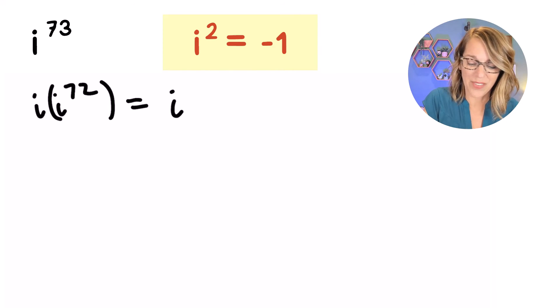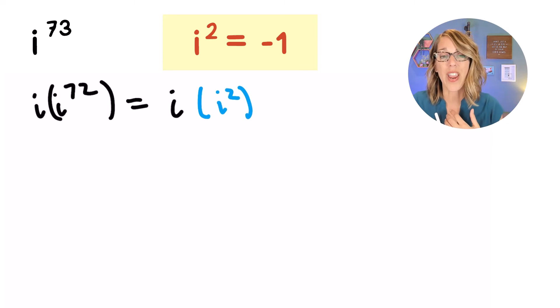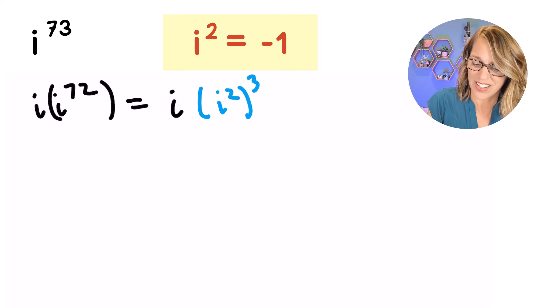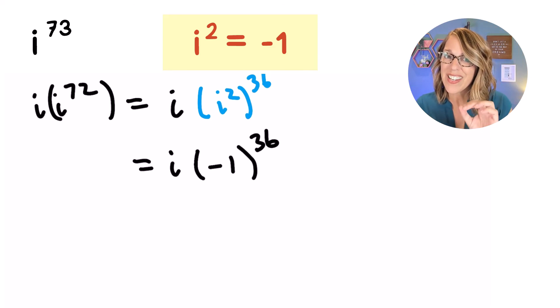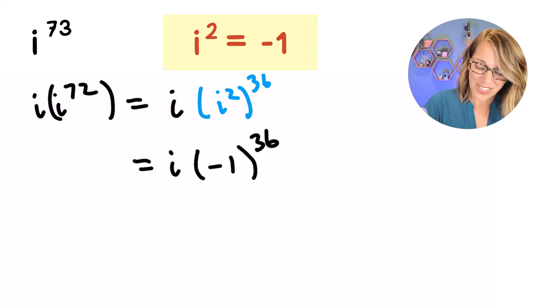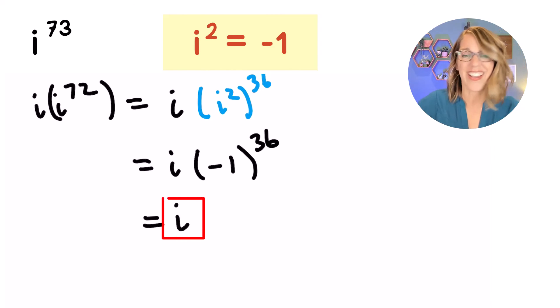I'm going to leave that i out in front and rewrite i to the 72nd as a power of i squared. Now 72 divided by 2 is 36, so I get a 36 on the outside here, and that's going to leave me with an i. I'm going to replace i squared with negative 1, and I have an even number of negative 1's. So my answer here is i.